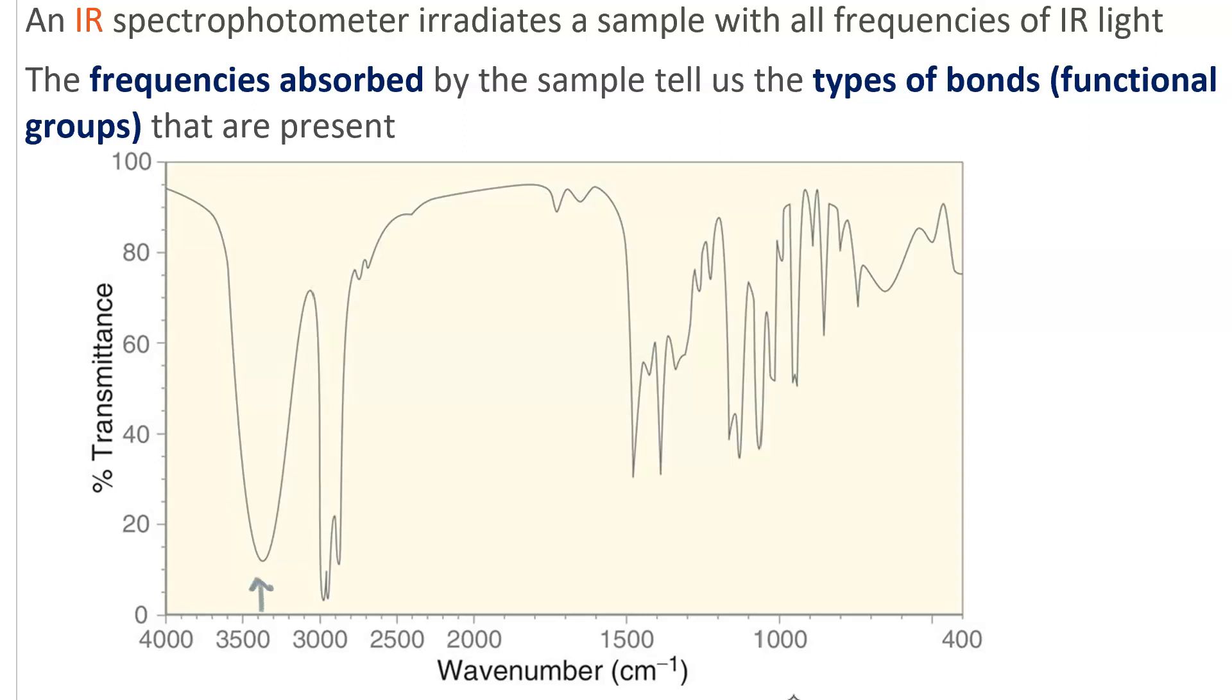Each one of these valleys we actually think of as peaks because it's transmittance. So, we've got big peaks, sharp peaks, little peaks, all of these are peaks.